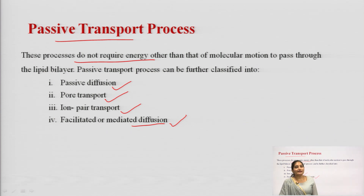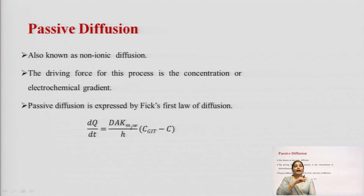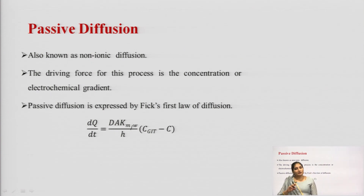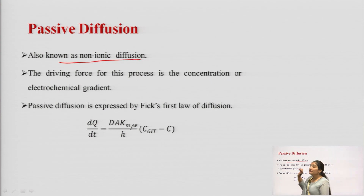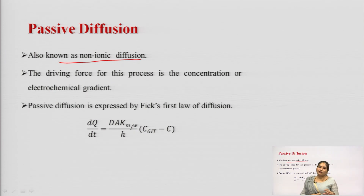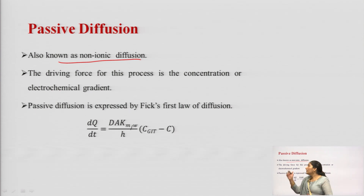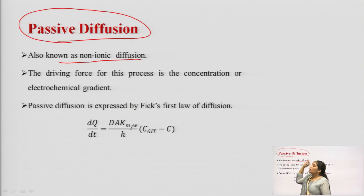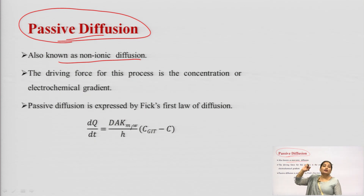The first process involved in passive transport is passive diffusion. As the name indicates, it is passive diffusion, so there will be no requirement of energy. This passive diffusion is also known as non-ionic diffusion, and more than 90 percent of drugs are getting absorbed with the help of this passive diffusion process.